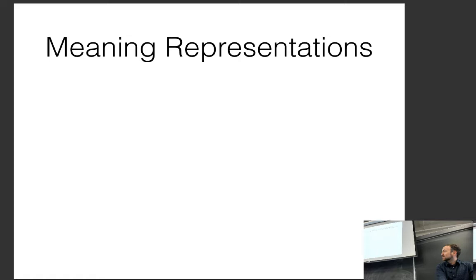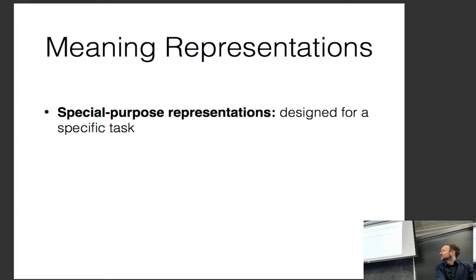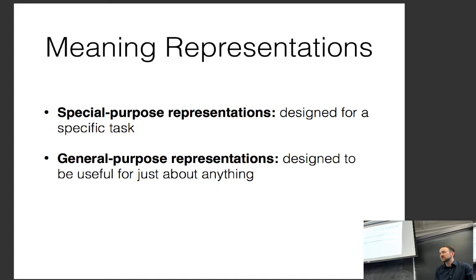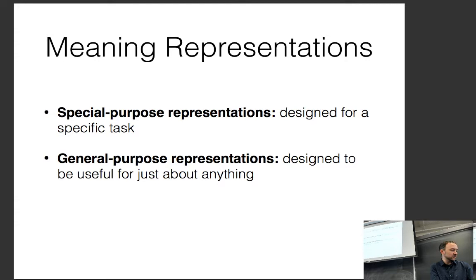One of the difficult things in semantics is how do you represent semantics in the first place. Ed Hovey teaches an entire class on this, so I will not be covering it in a lot of detail. For the purpose of what I'm going to talk about, I'll cover two varieties: special purpose representations designed specifically for a particular task, and general purpose representations designed to give you a representation of sentence meaning with certain properties — things like ensuring that sentences with the same meaning have the same representation.